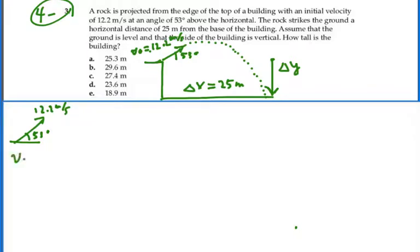Our initial velocity in the x direction is going to equal our velocity times the cosine of this angle. And that is going to be 12.2 times the cosine of 53 degrees. That will give us initial velocity of 7.34 meters per second.